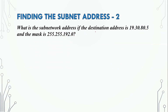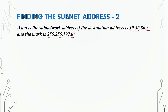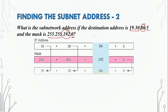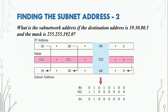Let's see another example. If we have a destination address of 19.30.80.5 and the subnet mask is 255.255.192.0, we apply the same AND operation shortcut: where the mask block is 255, the result is the same as the address block; where it is 0, the result is 0.